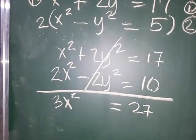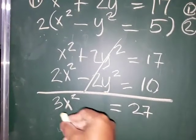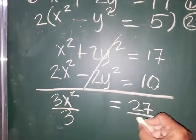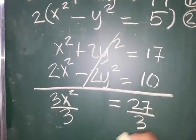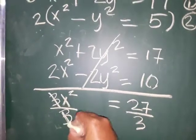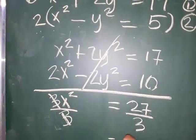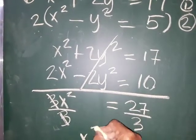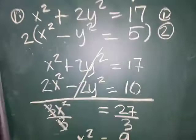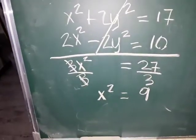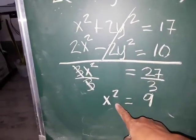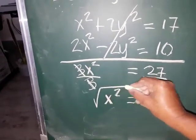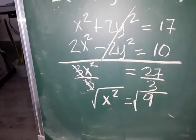Next, we need to divide both sides by 3 to isolate x squared. Cancel, cancel, cancel — 27 divided by 3 is equal to 9. So x squared equals 9. Since we have a squared term, we need to put a square root on both sides.